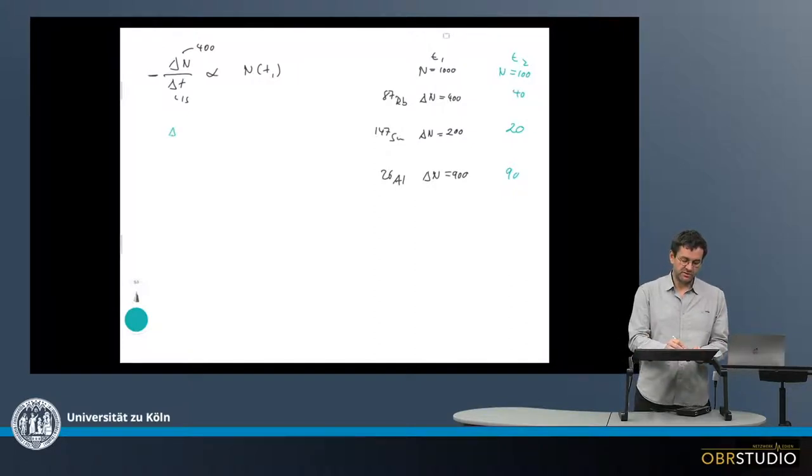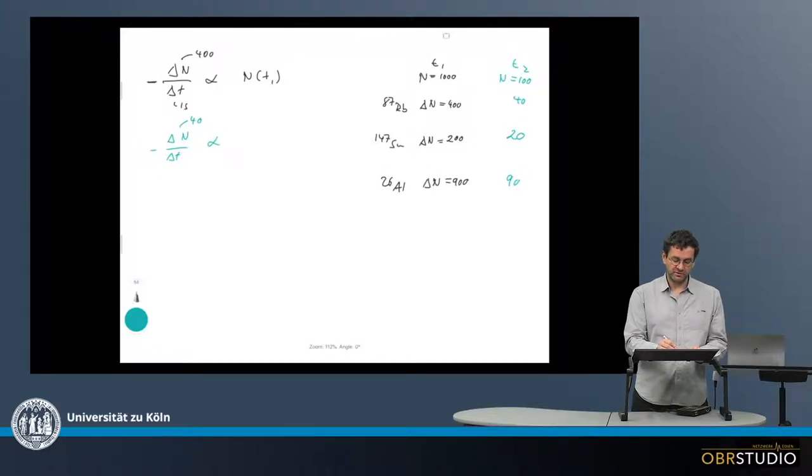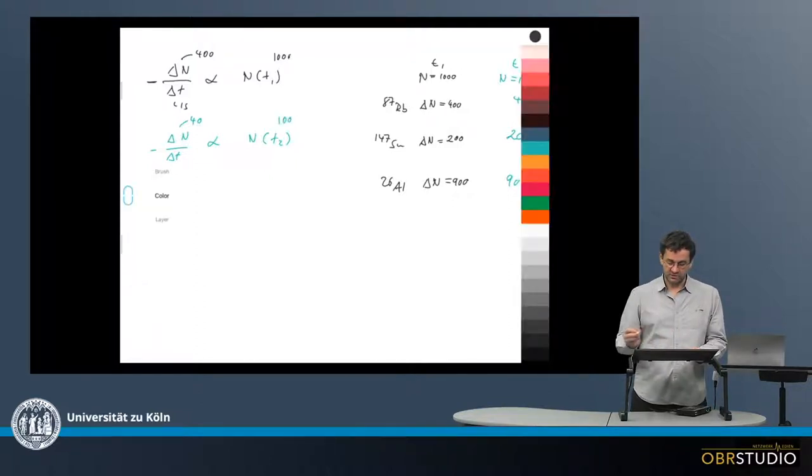So the equation would look the same, it's delta n divided by delta t, again minus because that's what we subtract. So in case of rubidium, this is 40, this is proportional then to the amount that is present at t2, which in this case is 100 and previously would have been 1,000 here.